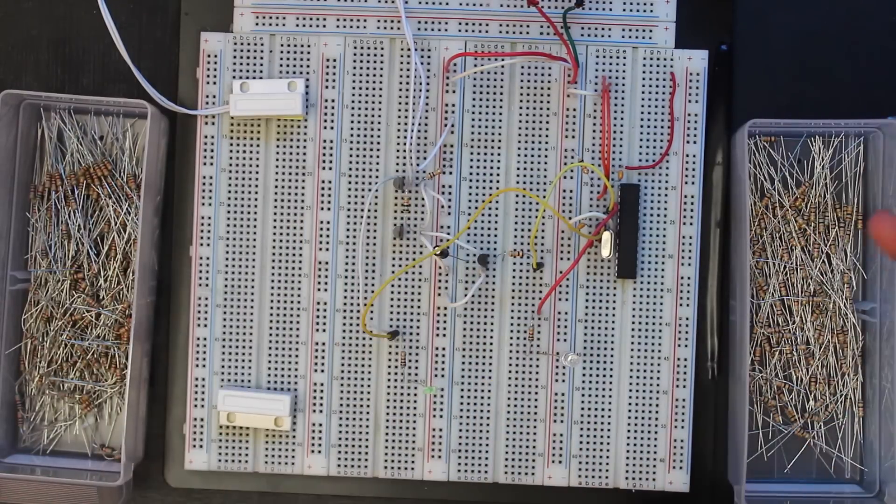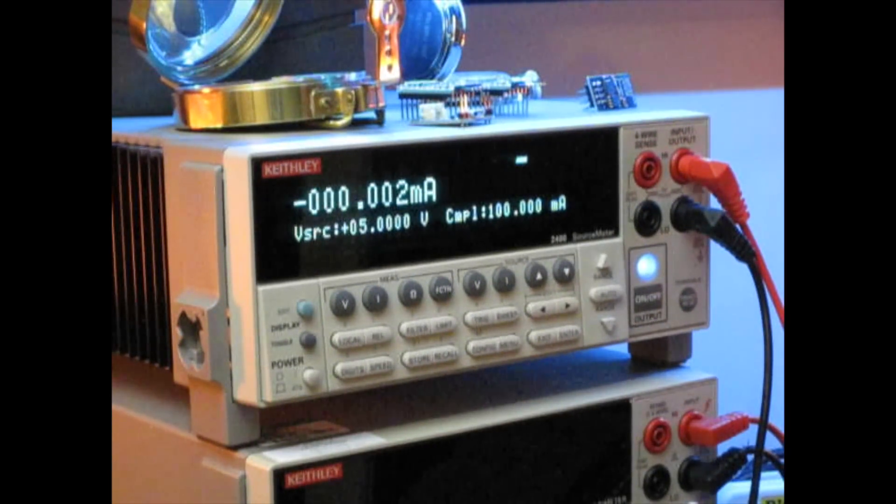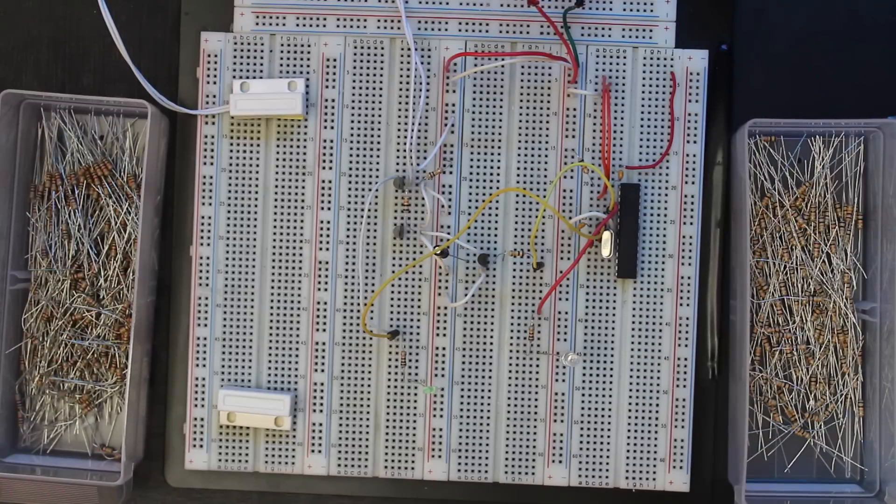for, what the digital pin states should be, and I want to benchmark all of that using the source measure unit up here. That's how the whole thing works. Just a quick little video. Thanks for watching!